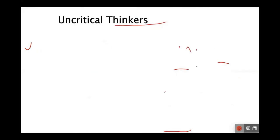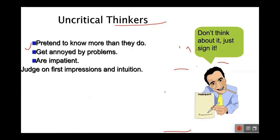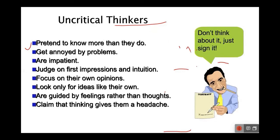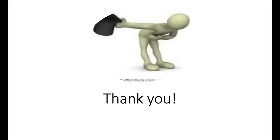Okay, great. So uncritical thinkers don't think about it, just sign it. Uncritical thinkers pretend they know more than they do, get annoyed by problems, are impatient, judge on first impressions and intuition, focus on their own opinions, don't consider other opinions, look only for ideas on their own. That's the other advantage of working out problems in groups: you could hear other people's opinions, ideas, interpretations, because it's really difficult for one person to know all the different points of view.